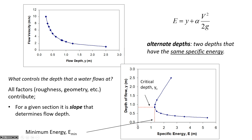Looking at a side view: water is flowing along with steady uniform conditions, then suddenly there's some irregularity. Does the water get shallower or deeper as it flows over that obstacle? It could actually go either way, depending on whether upstream conditions were supercritical or subcritical. We can't just use intuition - we have to be careful in these calculations to determine how water will react when encountering obstacles in the flow path.